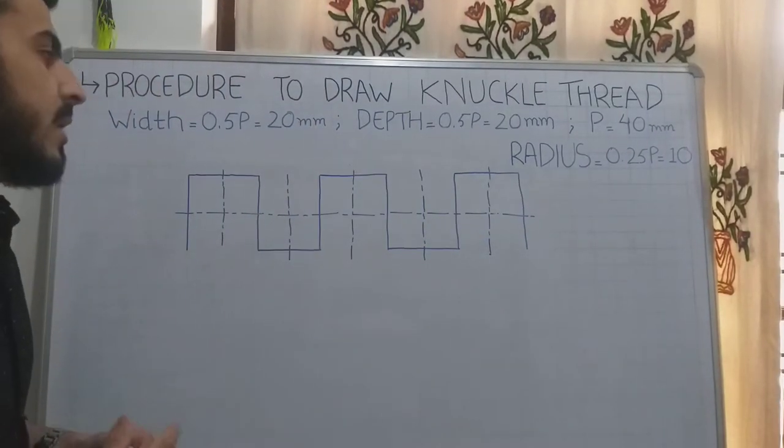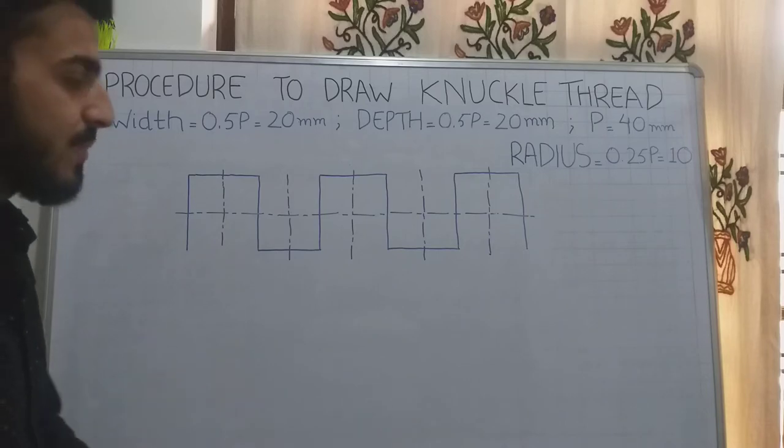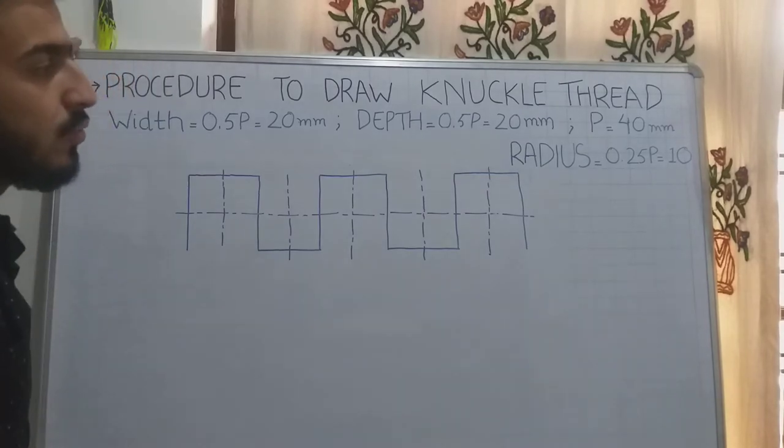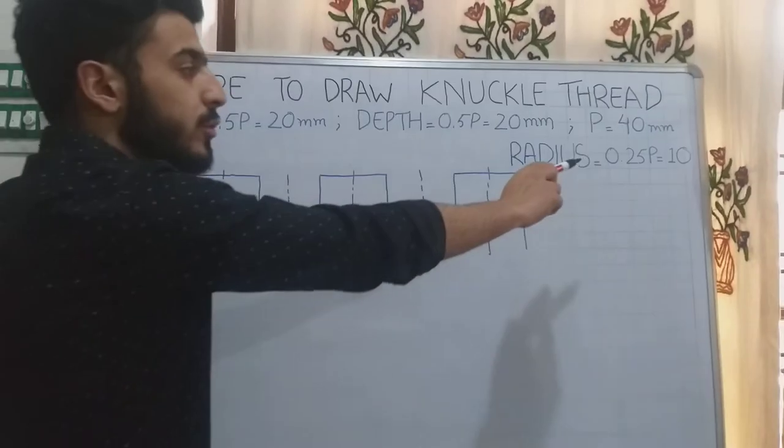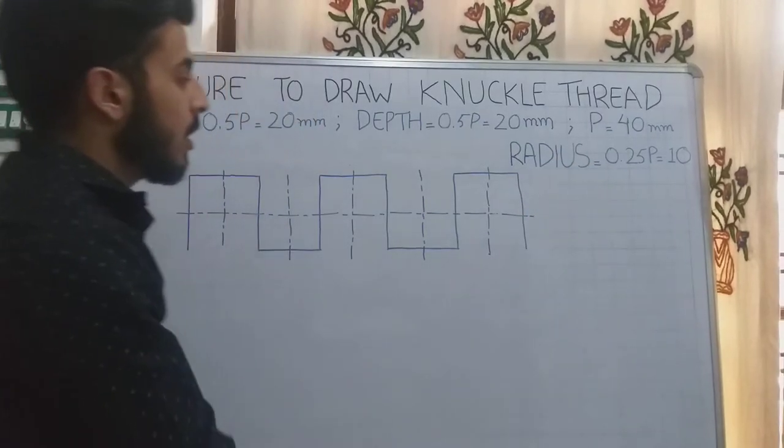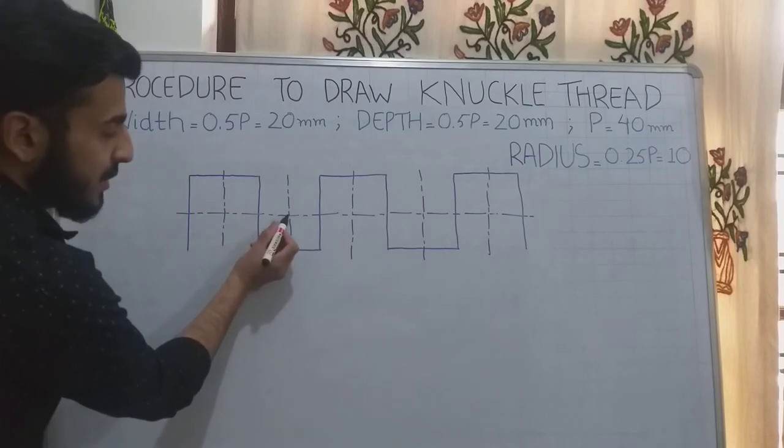Now I will use a compass with an H pencil. The radius of the compass is 0.25p, which comes out to be 10mm. And where the center lines are intersecting, I will use the compass.